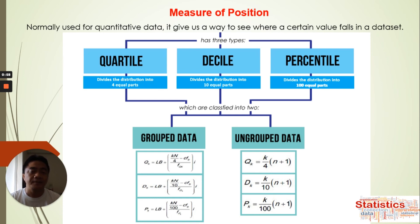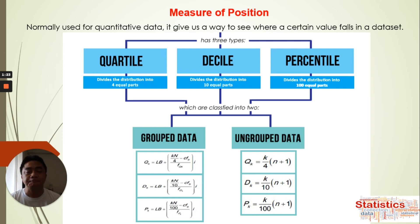For measuring position, we classify it into two: we calculate for ungroup data and for group data — the same approach as what we did for the measure of central tendency, where we found the mean, median, and mode using both ungroup and group data. For this topic we're also going to find these three types using different data. First, we'll go with the ungroup data.